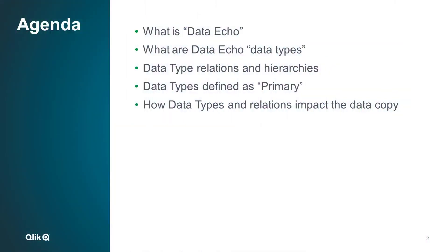The purpose of this video is to introduce a very important object of Gold Client named DataEcho data types. These data types play an important role in the copy process. We need to dive into this content so that the user understands what these objects are, that most data types have relationships and are part of one or more data type hierarchies, and that some data types have a special categorization known as primary data types. At the end of the presentation, I will summarize how these objects can have an impact on the data copy.